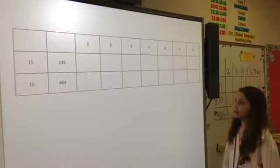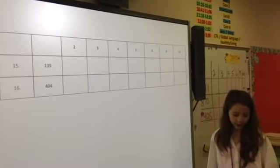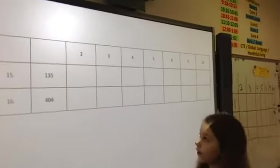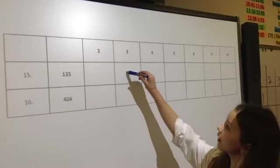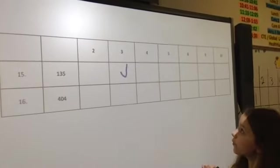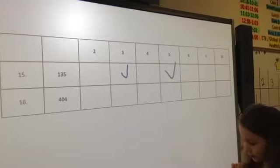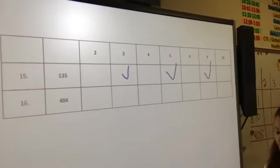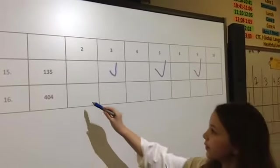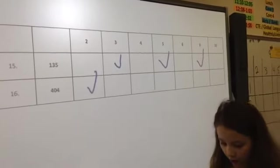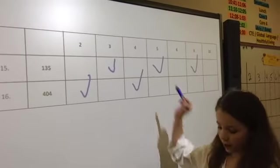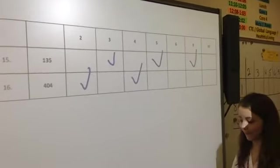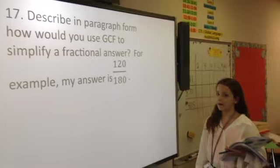So this is part of the test of the divisibility rules. So for 135, 2 does not go into it. 3 does. 4 does not. 5 does. 6 doesn't. 9 does. And 10 does not. For 404, 2 goes into it. 3 doesn't. 4 goes into it. 5 and 6, 7, or 5, 6, 9, 10, don't.